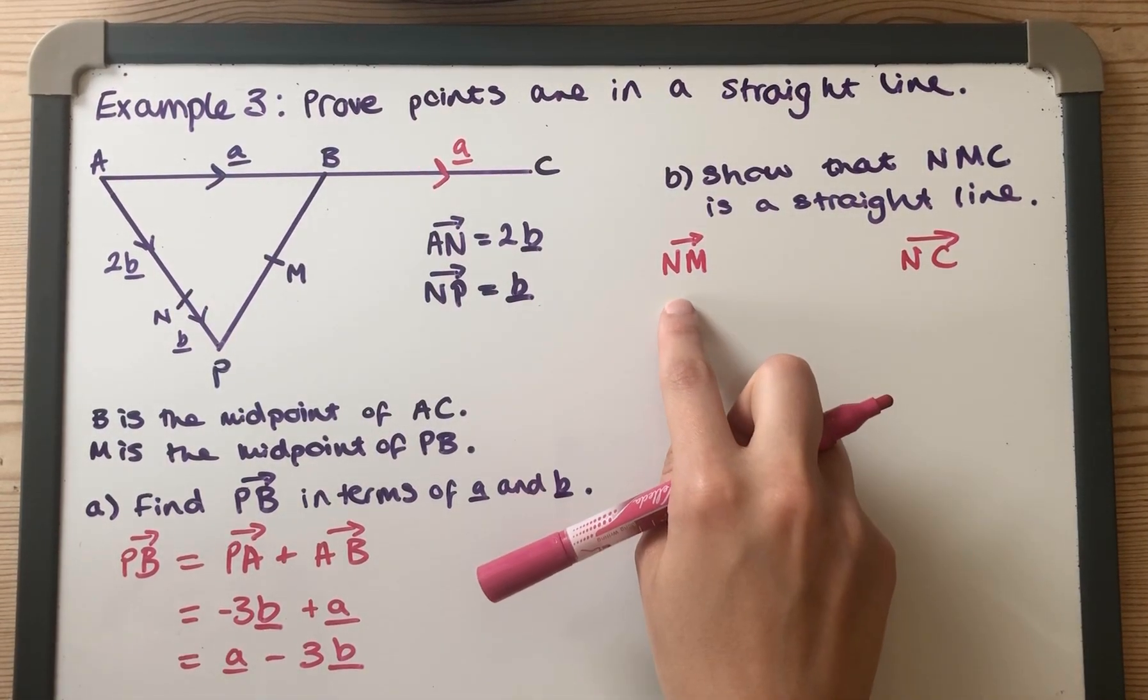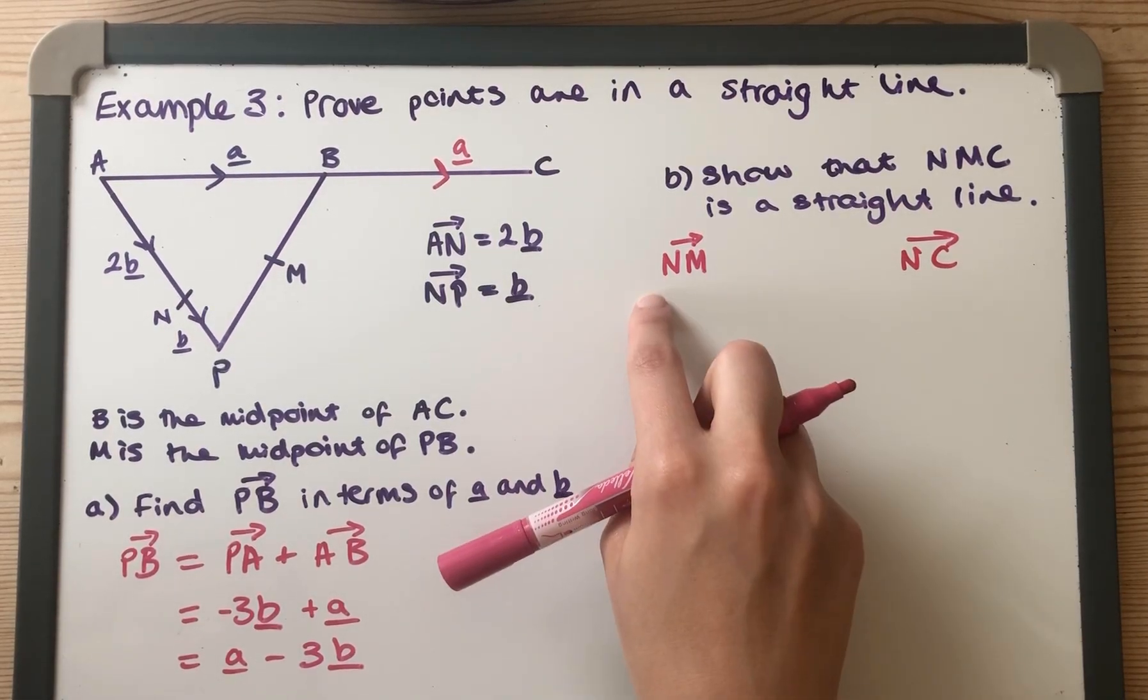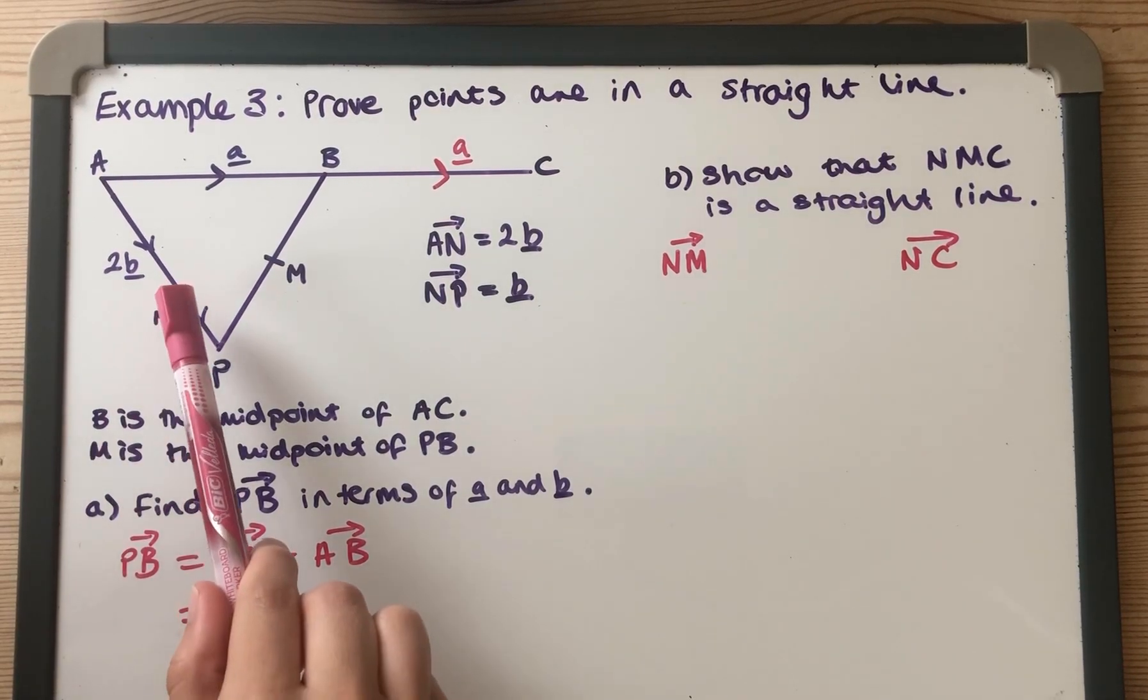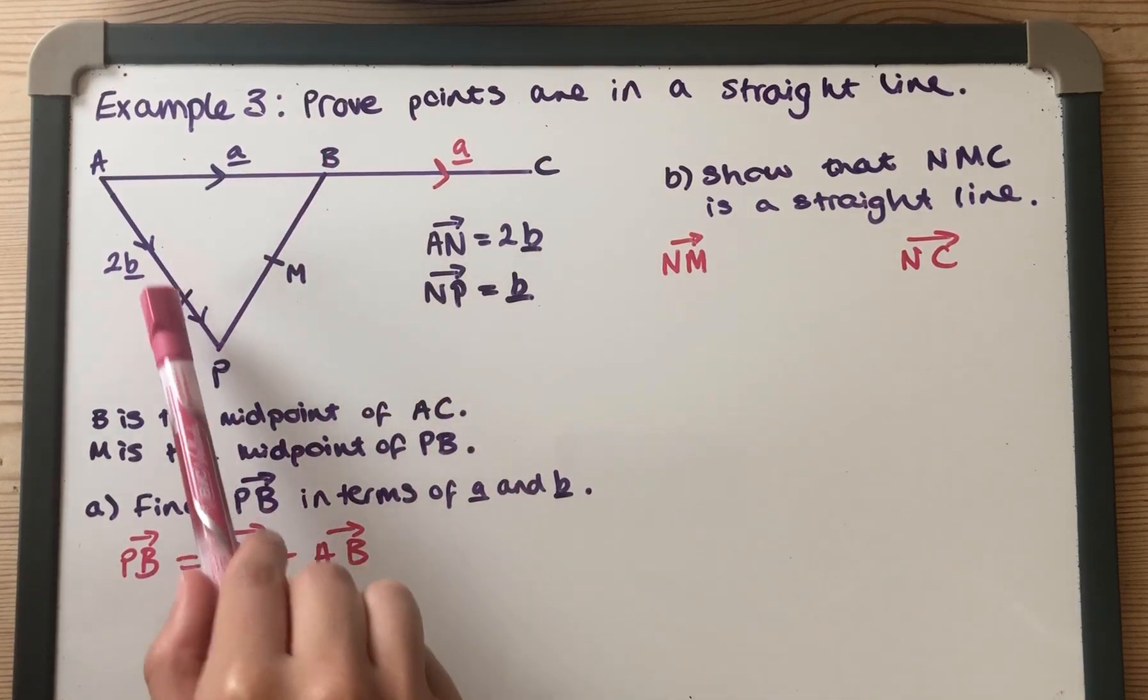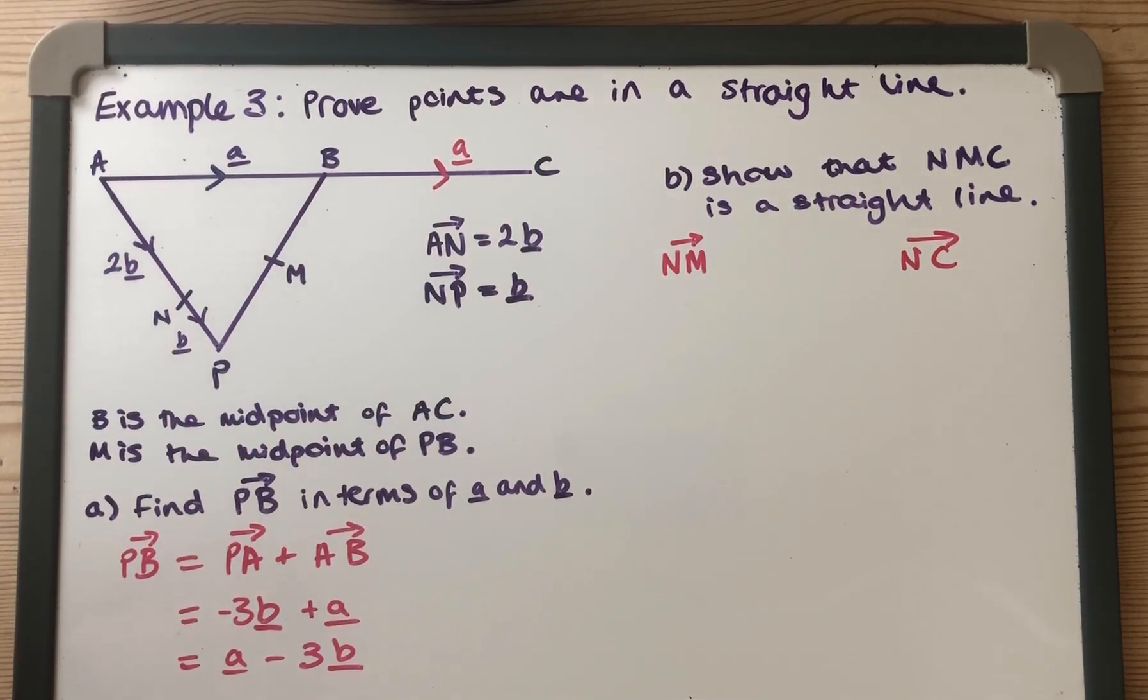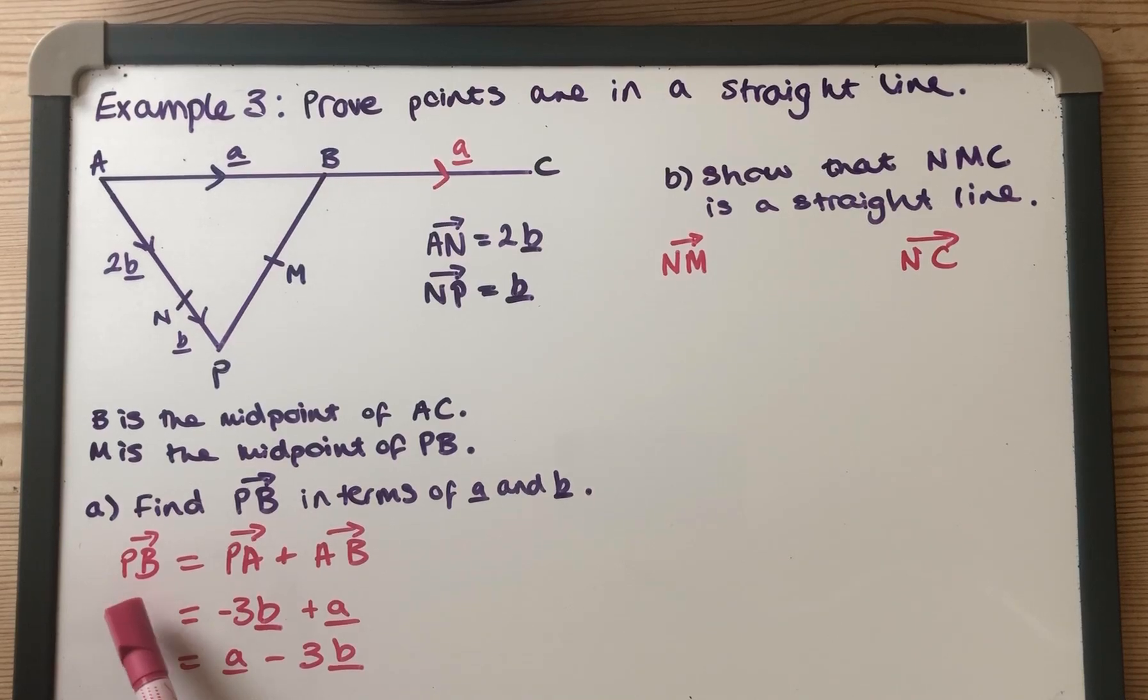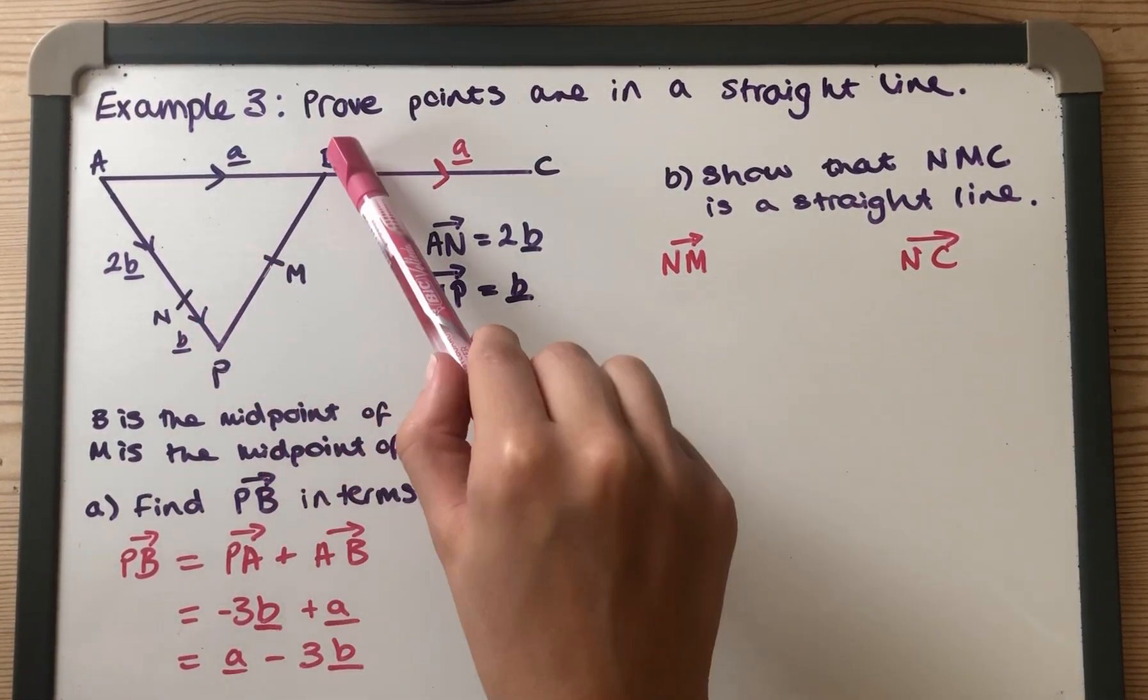So I'm going to start with N to M even though N to C is easier; if I get N to M over with, it'll just be done. So to do N to M, I am going to have to think about... I could go, you could think of it going around that way or you could think going around this way, and I think the easiest way to go around is this way because we've already got what PB is and we know that this bit is half of that.